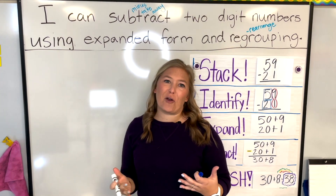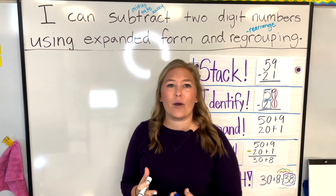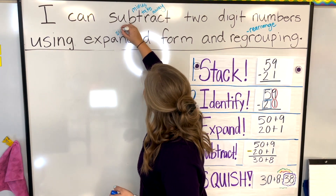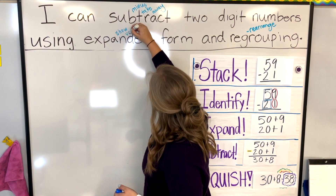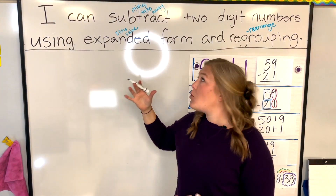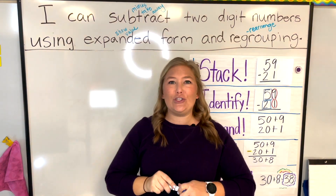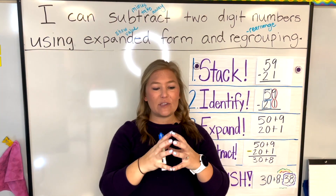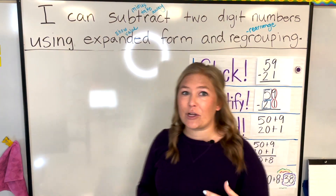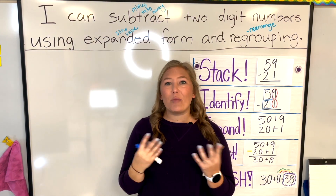We also have expanded form, and by now we've gotten really used to using it. That's when we show the value of digits in a number. So all we're doing today is subtracting two-digit numbers using expanded form — showing all the values — and regrouping, where we rearrange our place values to help us with our subtraction.